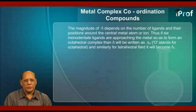Thus, if six monodentate ligands are approaching the metal so as to form an octahedral complex, then delta will be written as delta O, where O stands for octahedral. And similarly, for a tetrahedral field, it will become delta T.